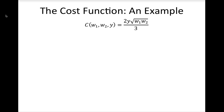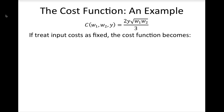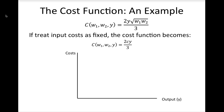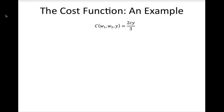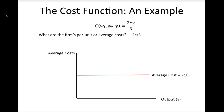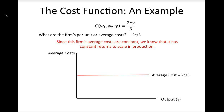For the remainder of this lesson, we will focus on the relationship between costs and output, treating input costs as fixed. The cost function then becomes 2/3 times a constant C times output. If we graph this, the relationship is a straight line extending from the origin. To find average costs, divide the cost function by output. We find that average costs are constant and equal to 2C over 3. Since this firm's average costs are constant, we know that this firm has constant returns to scale in production.